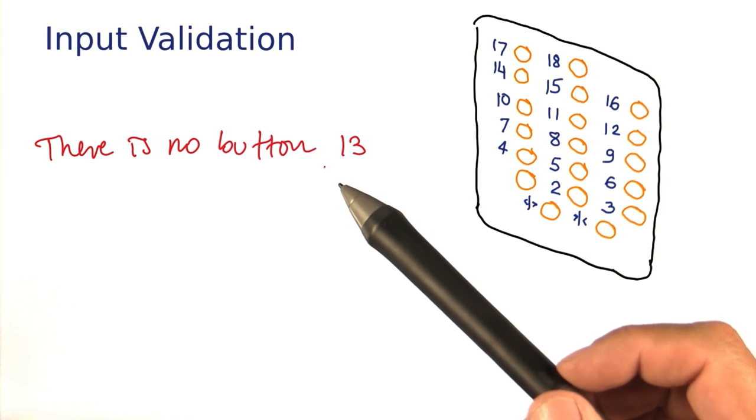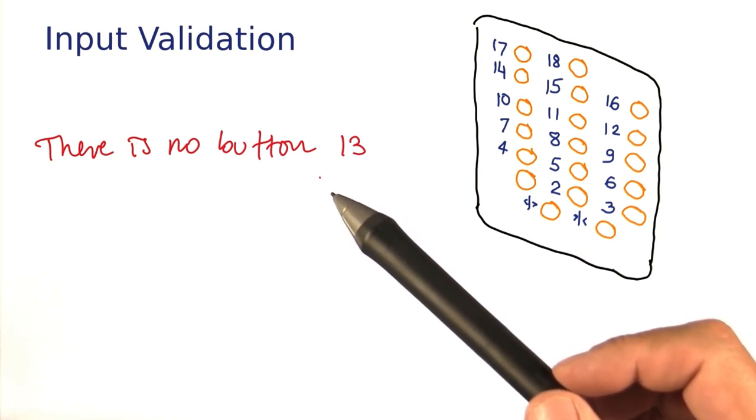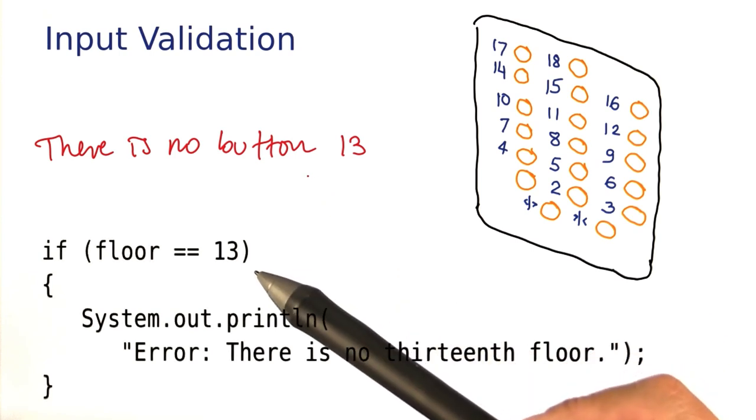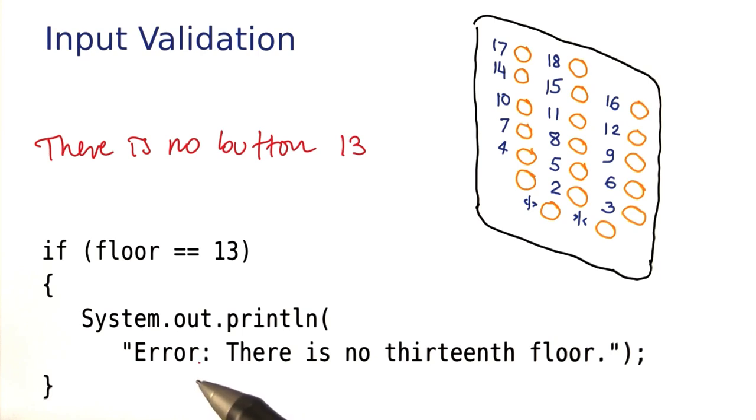Let's list the things that can go wrong and how one can address them in Java. First off, there's no button 13. And so in Java, you might write, if the floor equals 13, then print an error for the user. Let's continue.